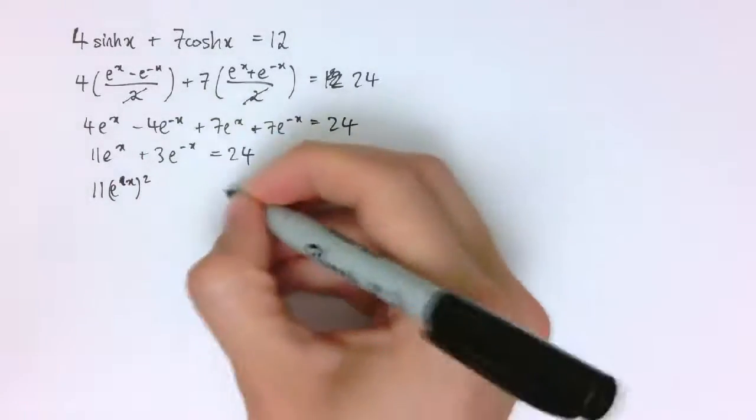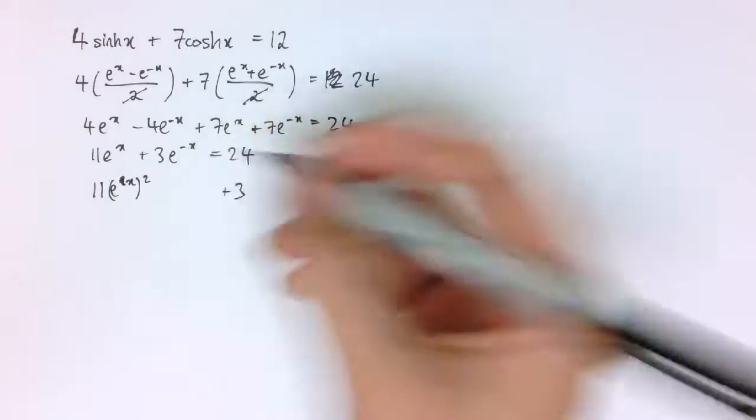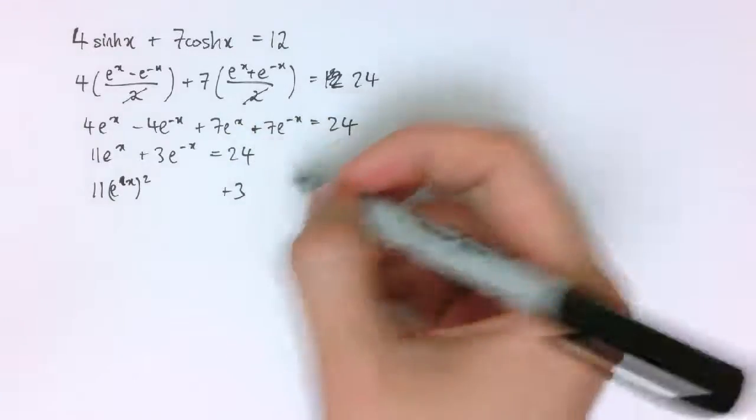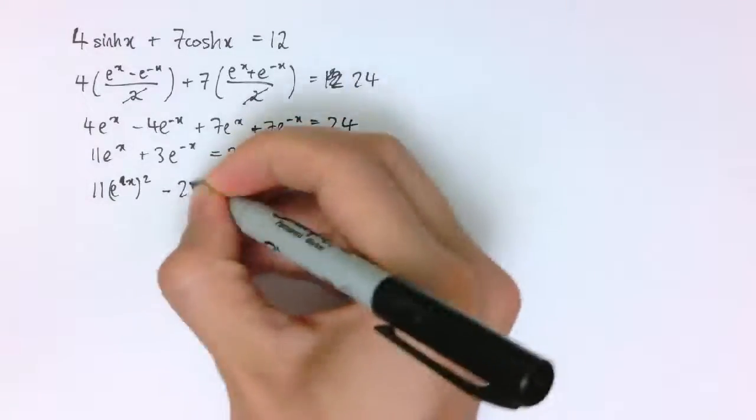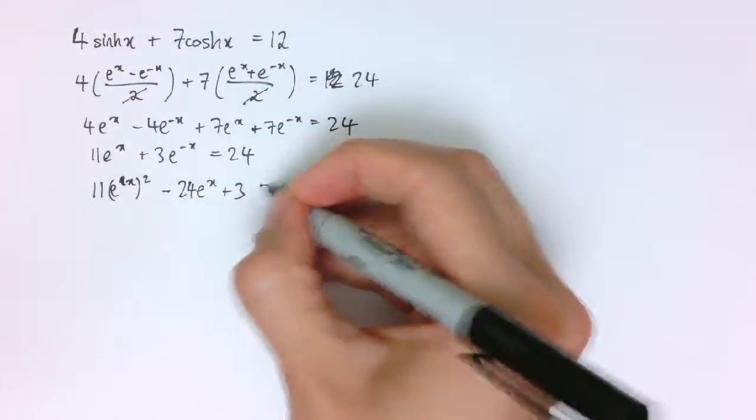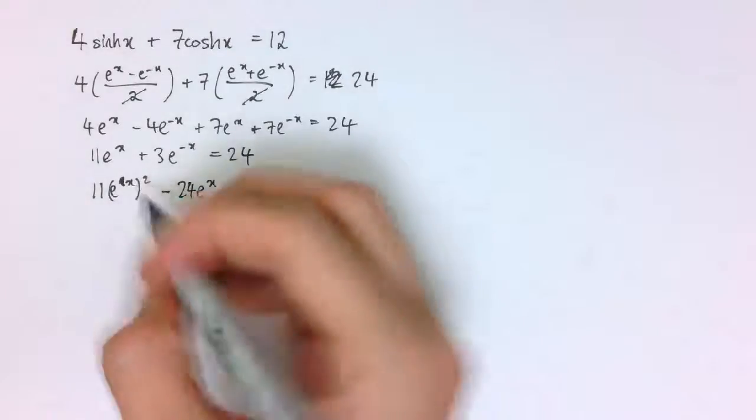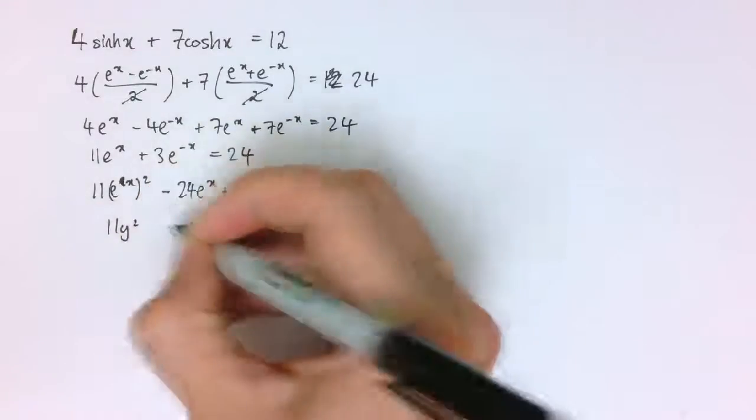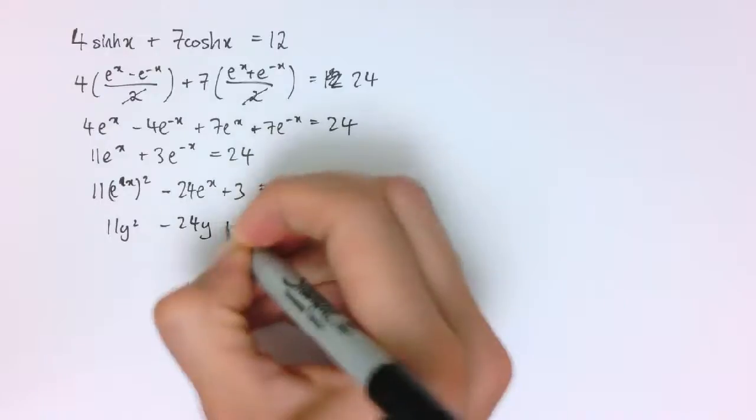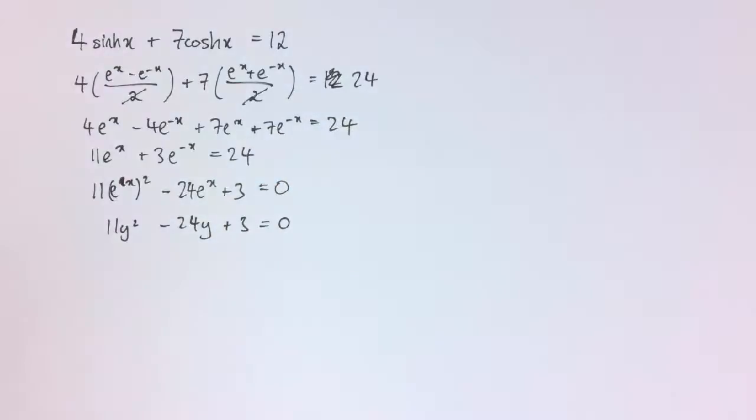This becomes just plus 3, e^(-x) times e^x, and this is 24e^x and I'll move that to the left hand side and write that as minus 24e^x plus 3 equals 0. So we can see this is a quadratic equation in e^x, it's like 11y² minus 24y plus 3 equals 0 where y is e^x.